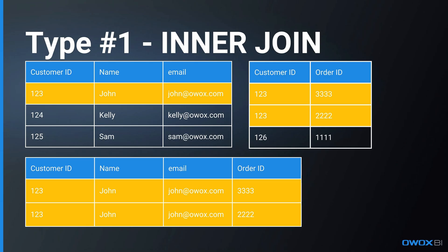We've retrieved only rows from the customers table that have at least one corresponding row in the orders table. You can see how Kelly and John are not included in our results because they haven't made any orders, and the customer with ID 126 is not included because they are not mentioned in the customers table.